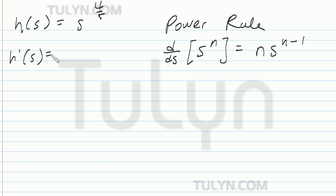So h prime of s, which is the first derivative of h of s, is equal to the derivative with respect to s of s to the four-fifths power. And that's going to be h prime of s equal to using the power rule. If you don't know what that is, go ahead and look to your right. Power rule is given.